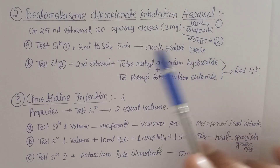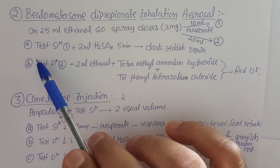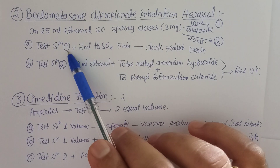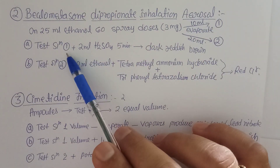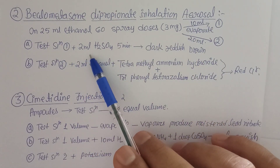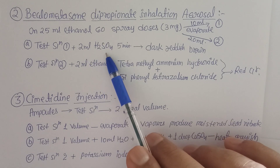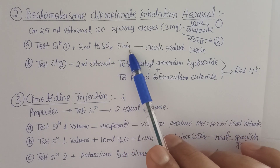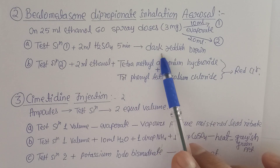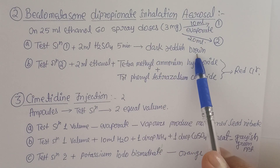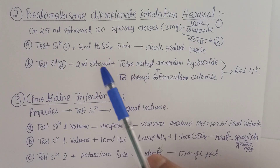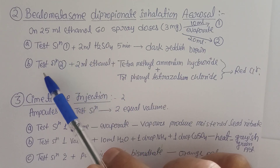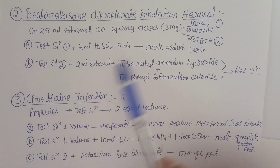First basic test for beclomethasone: to Test Solution 1 (evaporated 10 ml), add 2 ml of H₂SO₄ and stand for 5 minutes. You will observe a dark red-brown color, confirming the presence of beclomethasone in the aerosol.